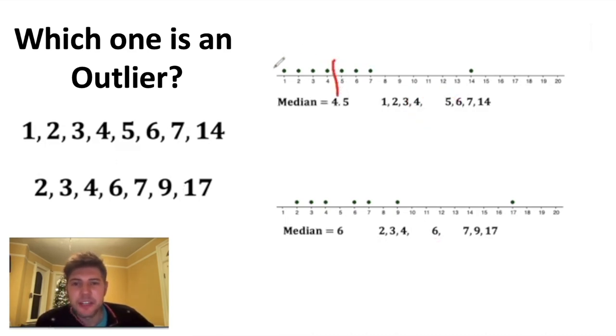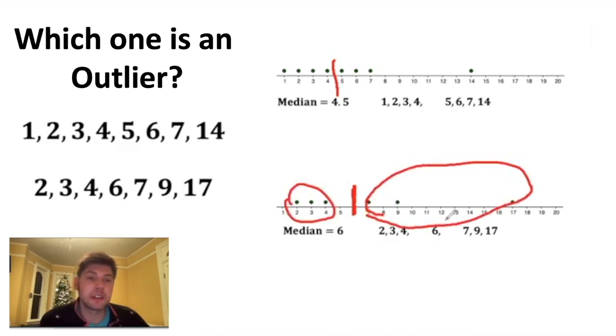At the median of 4.5, we can see that half of the data is to the left and half is to the right. Same thing at the six - half of the data is to the left of this median and half is to the right. Sure, it takes up more distance, but it's still half of the observations.